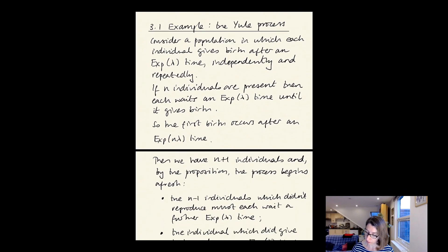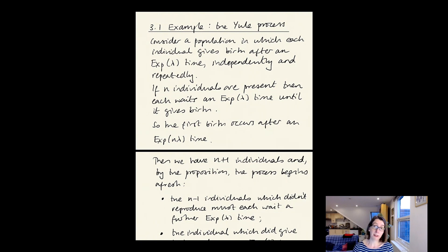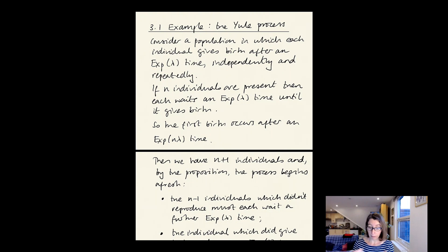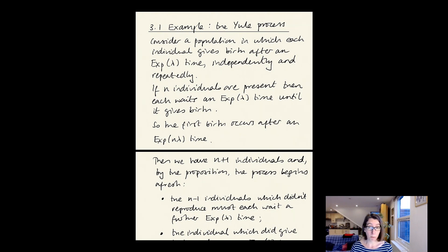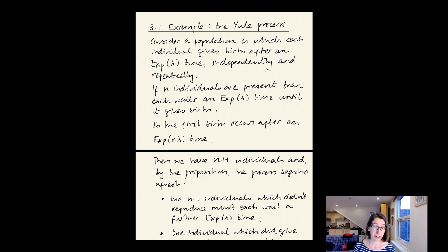Section 3.1 is a worked example — the prototypical example of a birth process, called the Yule process. Consider a population in which each individual gives birth after an exponential lambda time, independently and repeatedly. Individuals don't die; they just keep going, and every exponential lambda length of time they give birth. So if there are n individuals present at a specific time, each waits an exponential lambda time until its next birth, meaning the first birth occurs after an exponential n*lambda time, being the minimum of n independent exponentials.